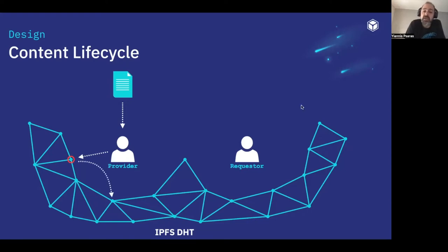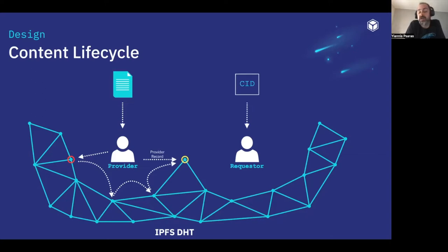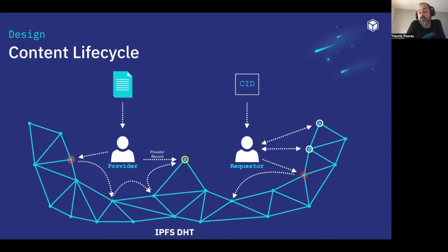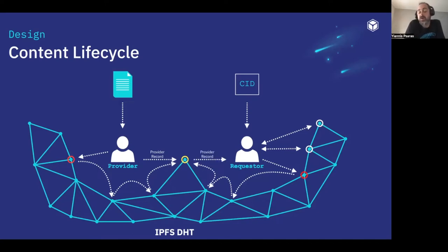What the DHT does then is some magic — it finds a proper node to store the provider record. On the retrieval side, the requester would have to know the CID. They're going to ask immediately connected peers through BitSwap, and if those answers are negative, then they're going to go to the DHT and ask for the same CID. The DHT hopefully will end up at the same node and return the provider record, giving the requester the contact details of the provider so they can set up a connection and transfer the data.